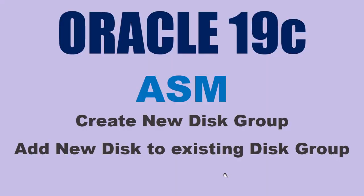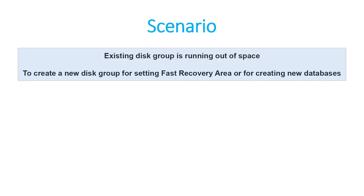Hello, in this tutorial I'll talk about how to create a new disk group or add a new disk to an existing disk group in an ASM environment. The scenario here is your existing disk group is running out of space and you want to extend it — that's one scenario. Or you want to create a new disk group for setting up a fast recovery area or for creating new databases. I've given an example for FRA, but you can use this new disk group for any other purpose.